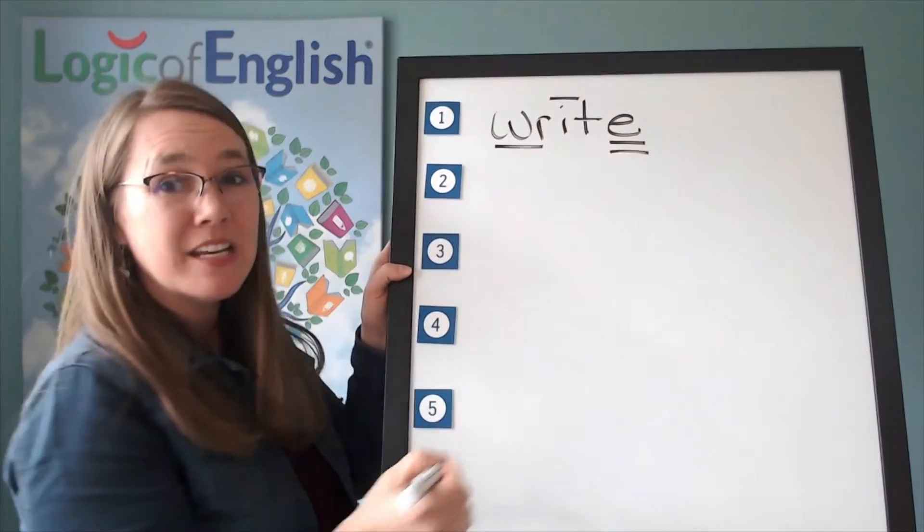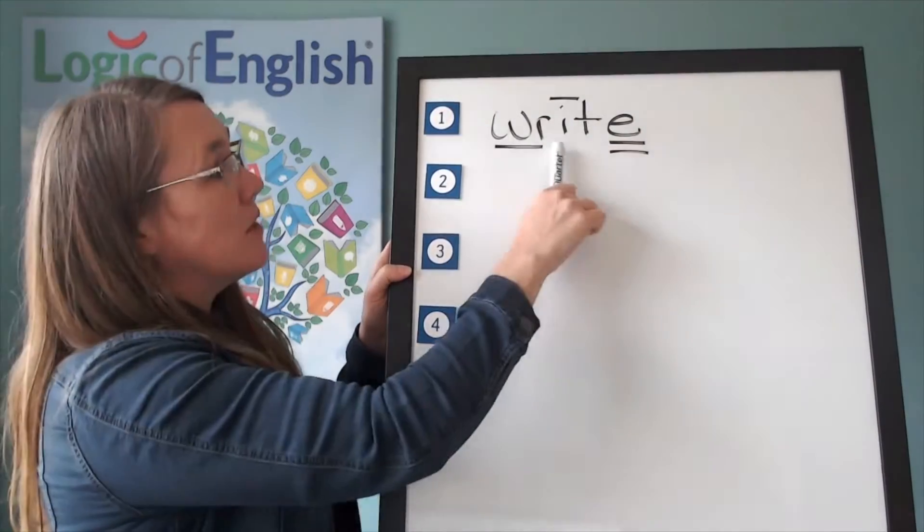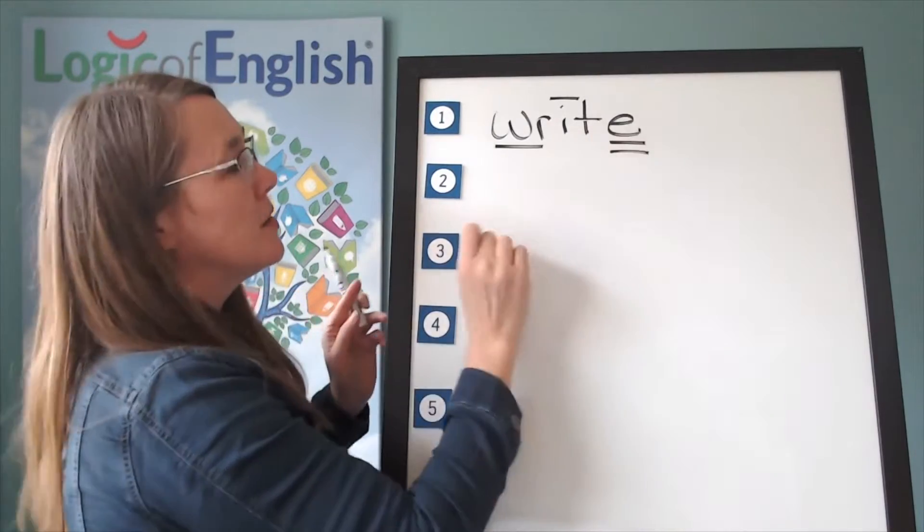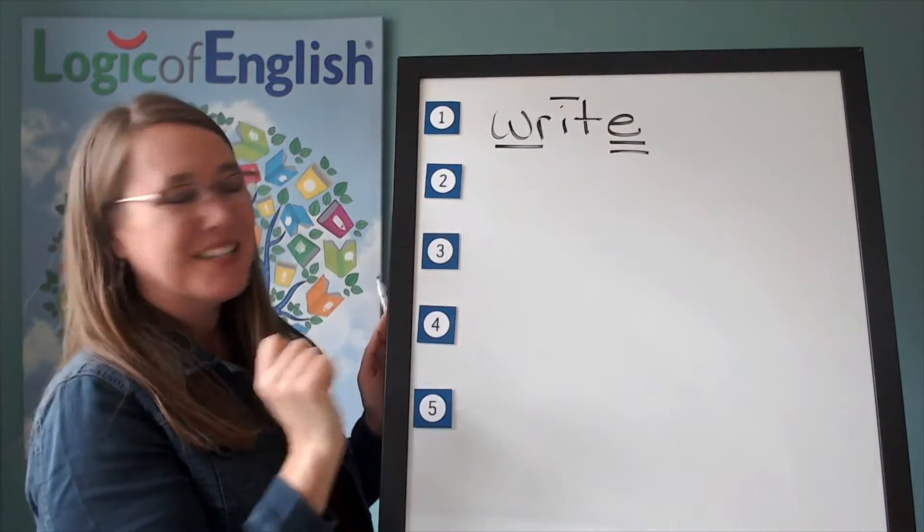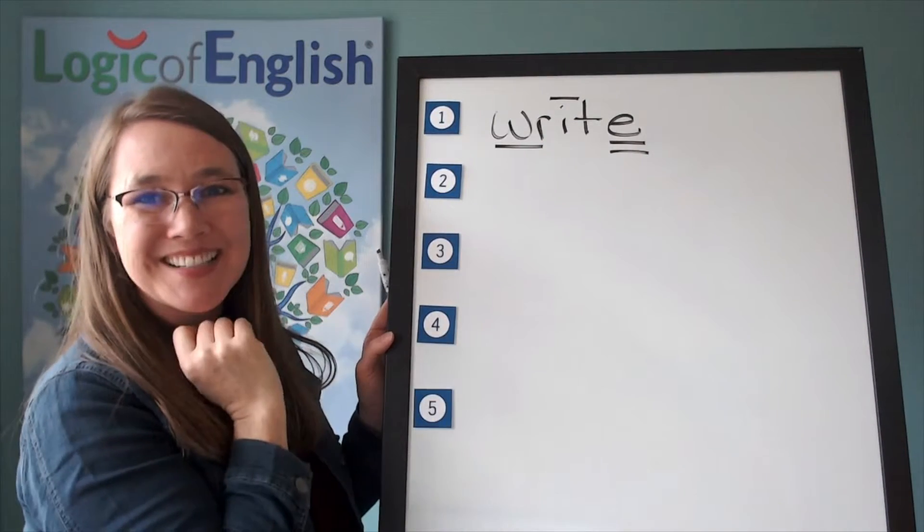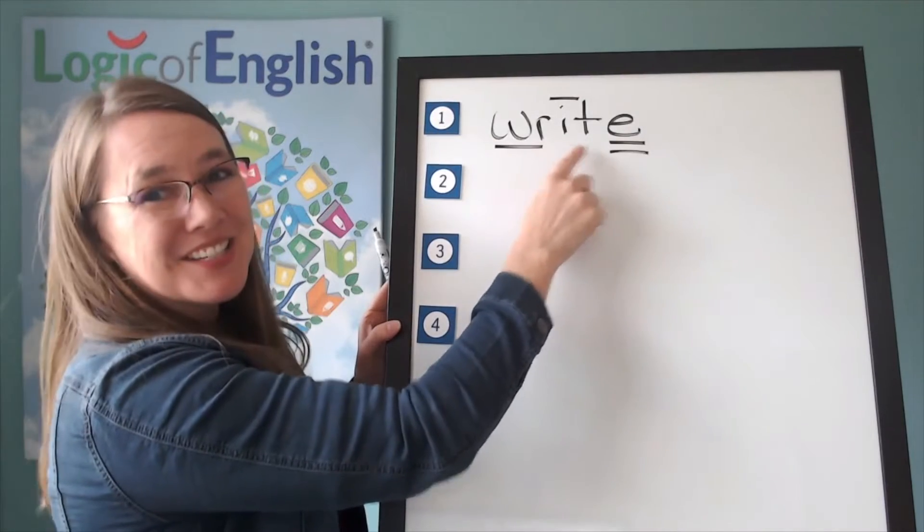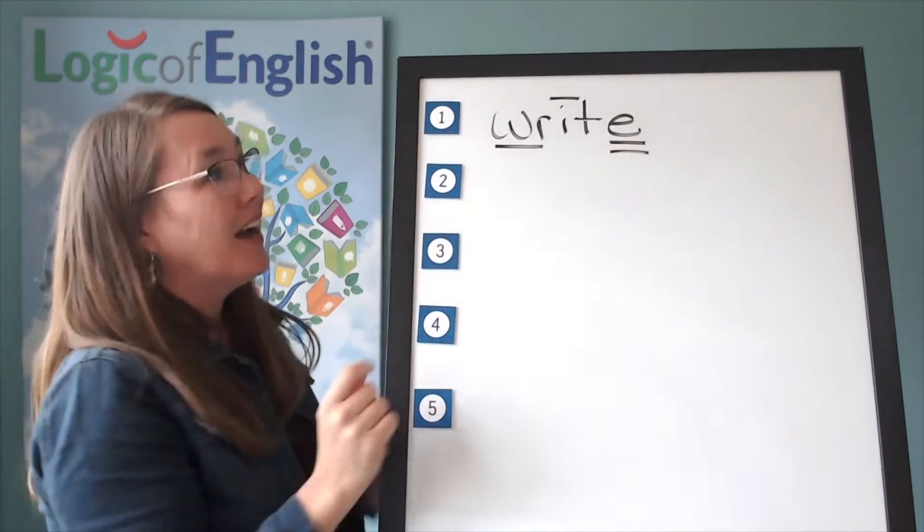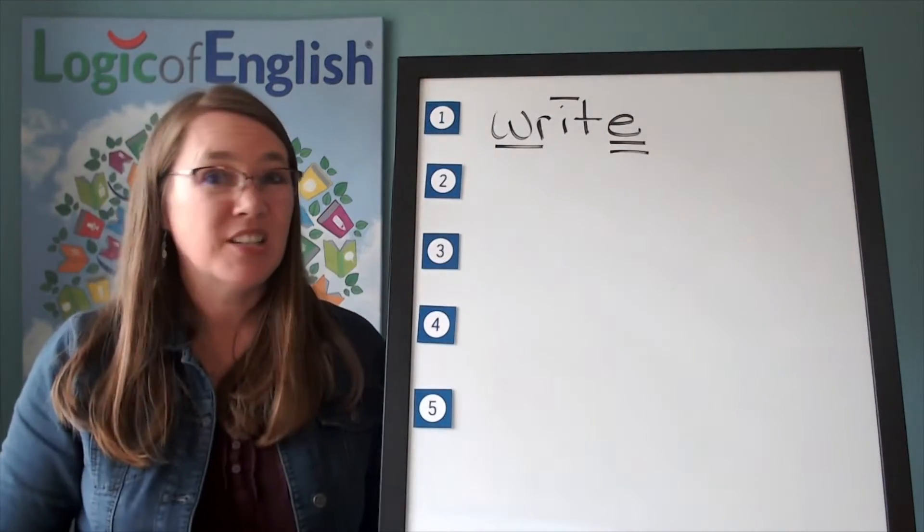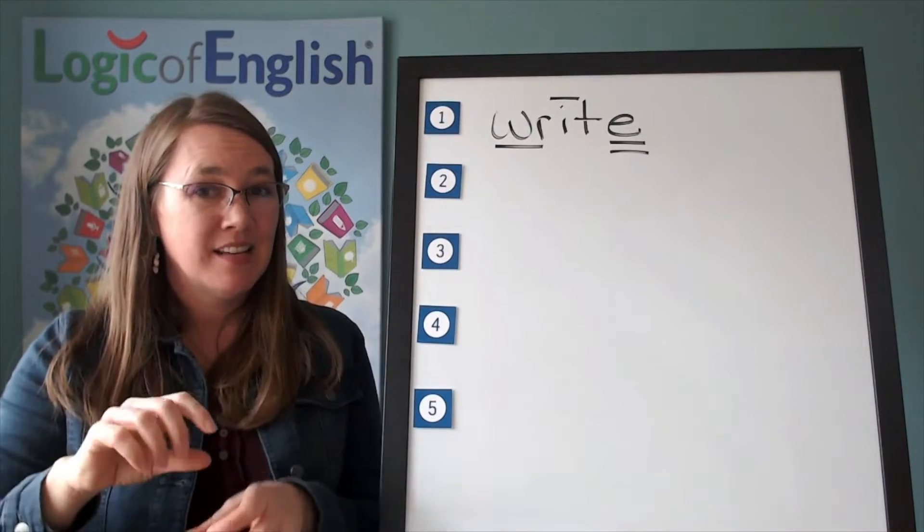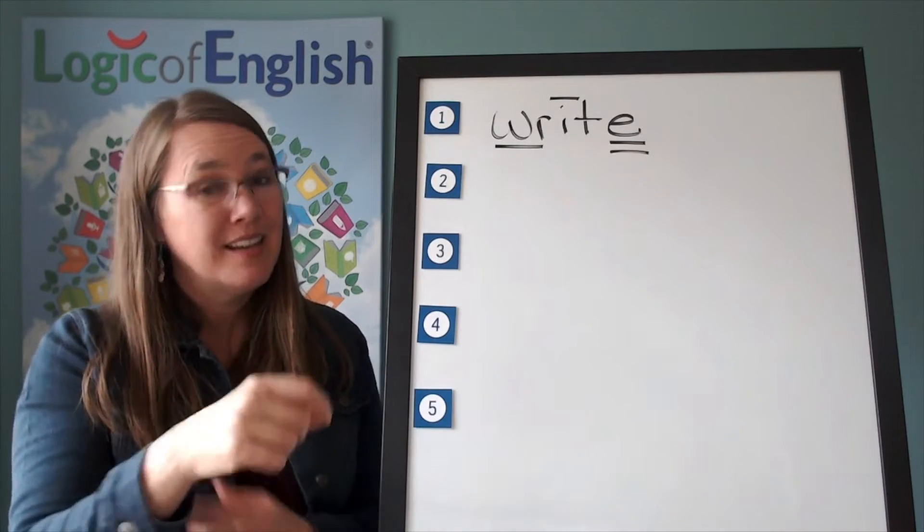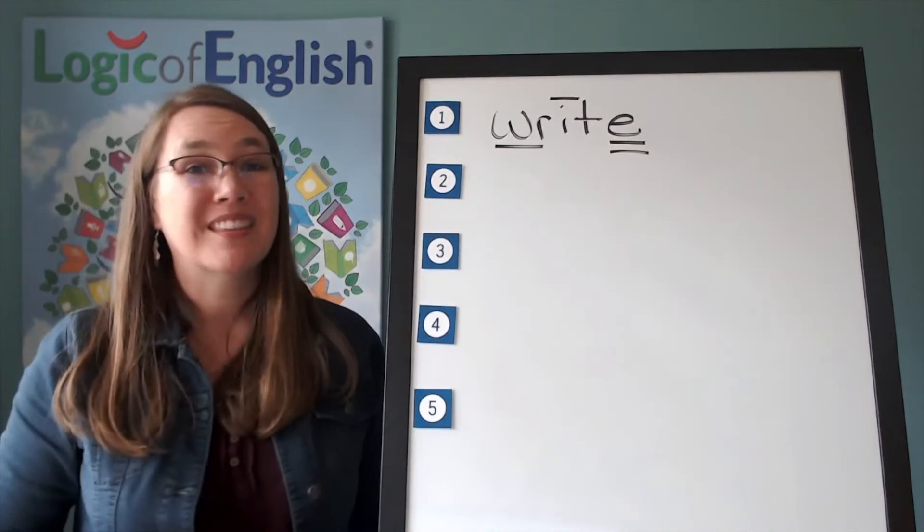Why do we have a silent final e in write? To make the vowel say its long sound. What would it say without it? Rit. But with it, it says write. Let's sound it out. Er, i, t, silent final e. Er, i, t. Write. So I have a question. How does this word relate to twisting? Did you notice when you were writing that your wrist was twisting? That's why it's spelled with that phonogram.